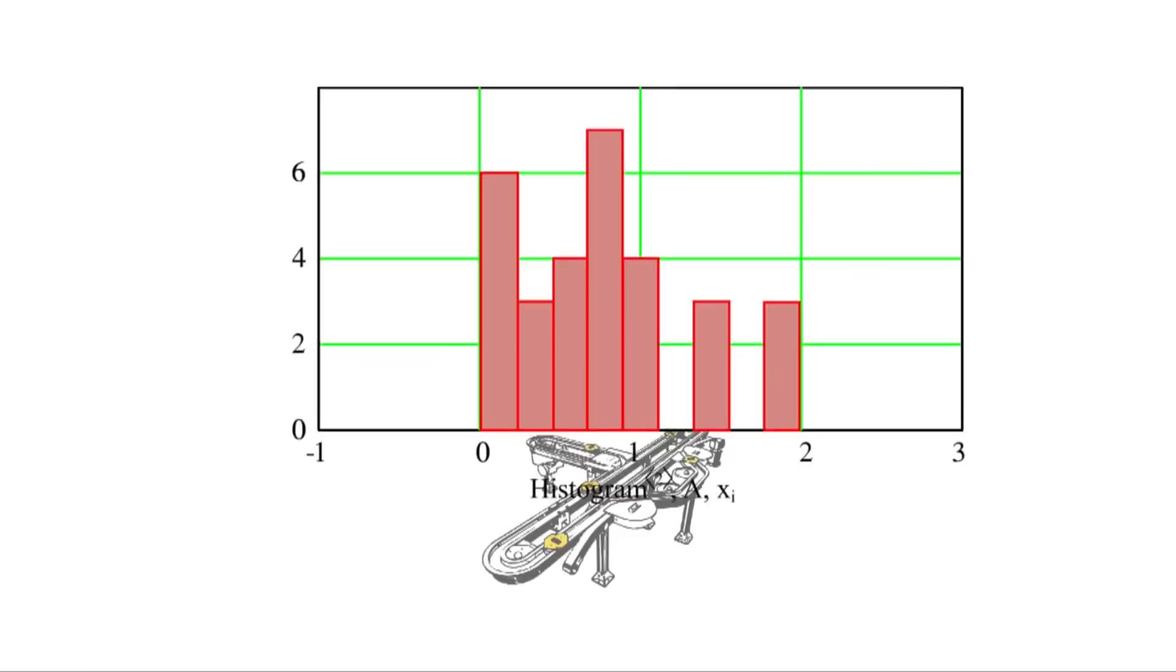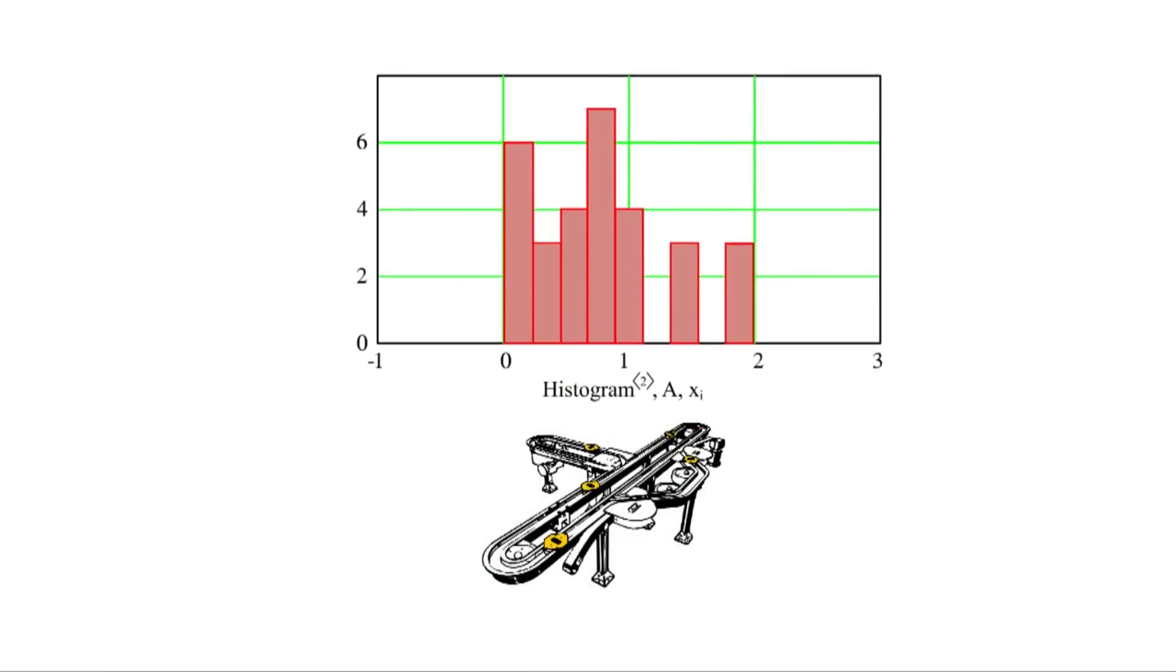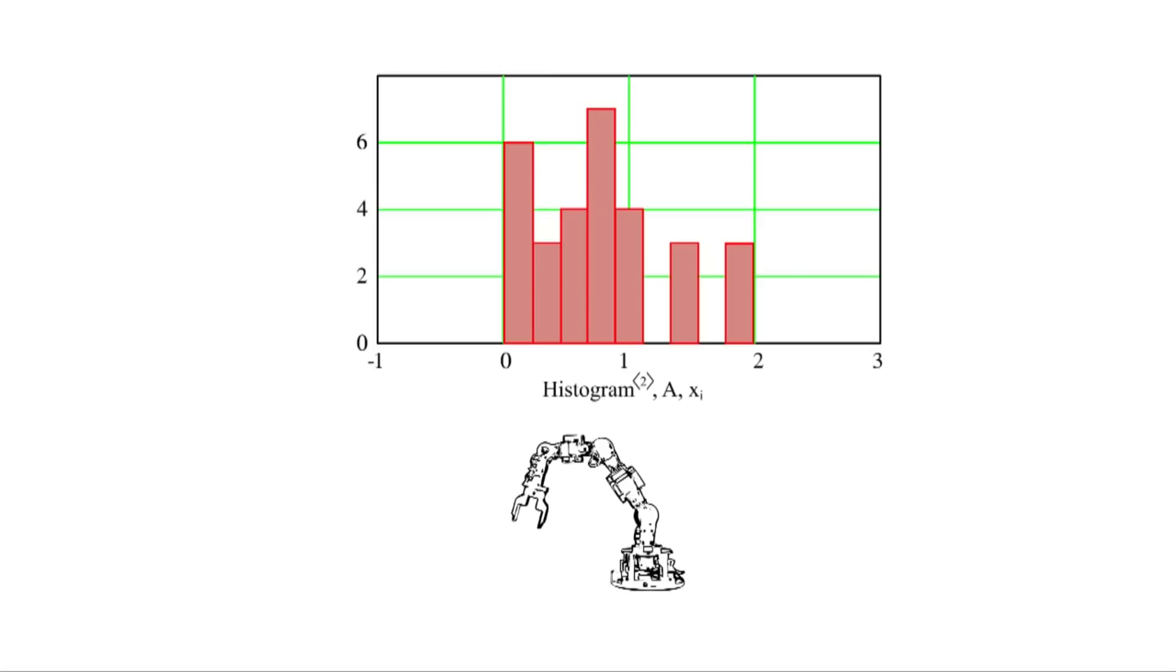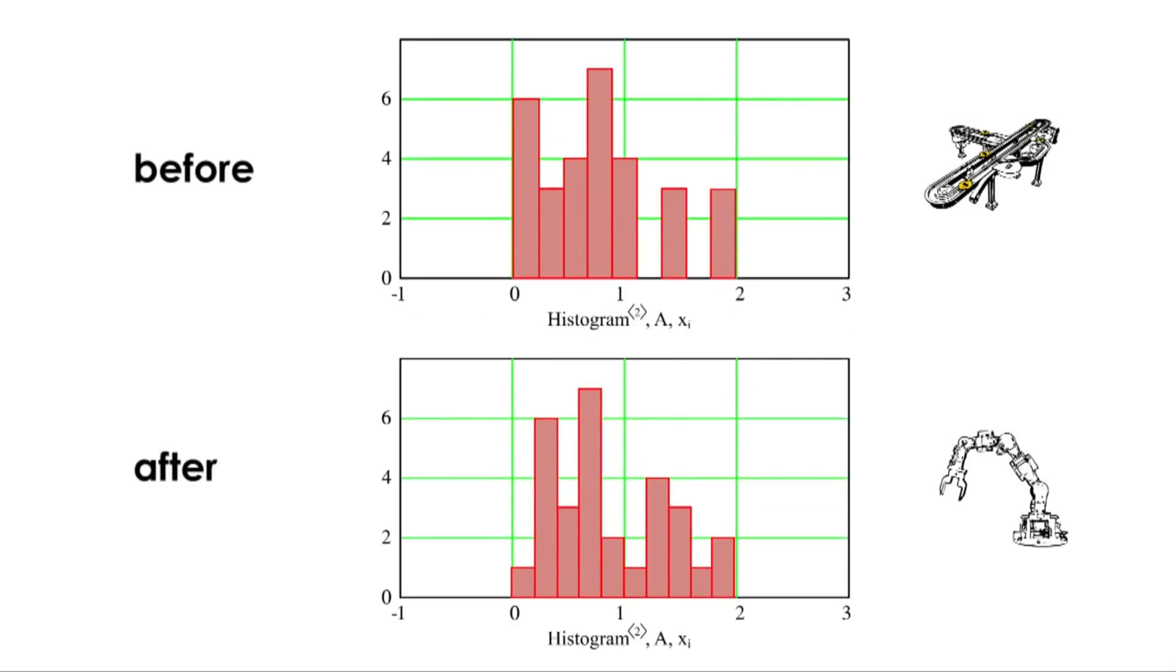Based on this, a decision was made to change the 5-palette conveying system to a robotic manipulator at a considerable cost. But surprisingly, this had no effect on the overall variation. The histogram just assumed a different shape.